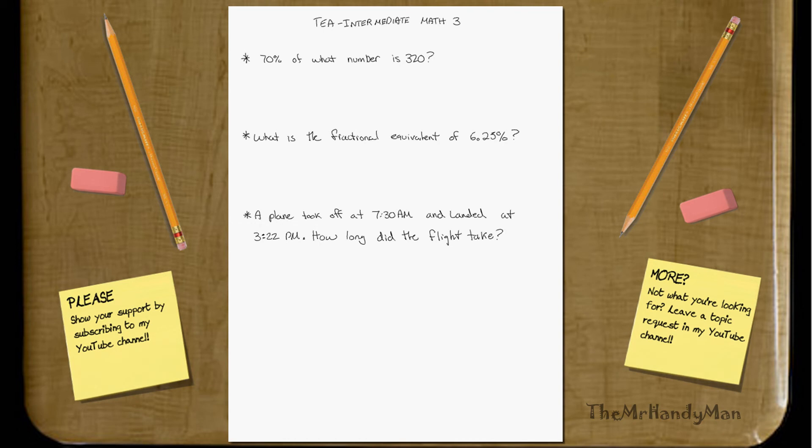What's 70% of what number is 320? Well, let's just write it out mathematically. That's going to be a number, which I'm just going to label N, times 0.7, 70%, equals 320, correct?